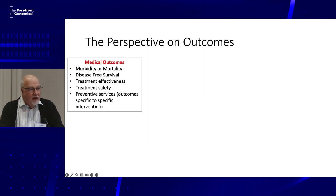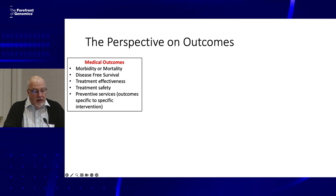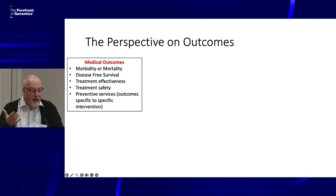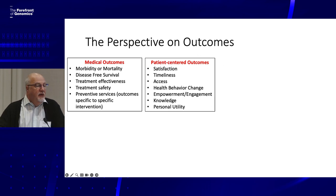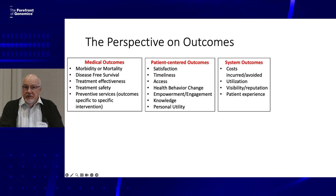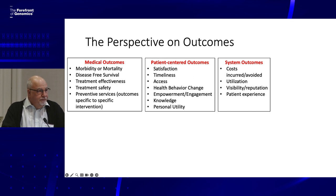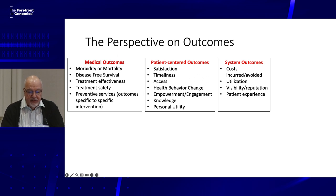So how about perspectives on outcomes? There are medical outcomes — morbidity and mortality, disease-free survival, treatment effectiveness and safety, and preventive services. There are patient-centered outcomes: service, satisfaction, timeliness, access to care, health behavior changes, empowerment and engagement, knowledge, and personal utility. Healthcare systems themselves have outcomes they measure — costs incurred and avoided, utilization of services, visibility, reputation, and patient experience. And then there are cost outcomes. We want to use standardized costs associated with interventions and health states — for example, a cost per QALY. The problem is that measuring costs in the United States is extremely difficult; we know a lot about charges, but not a lot about actual costs.